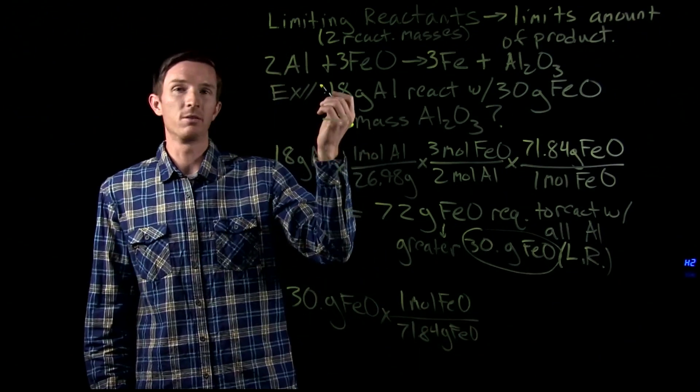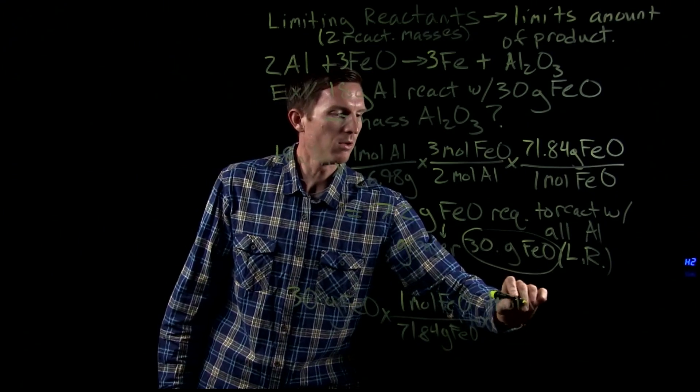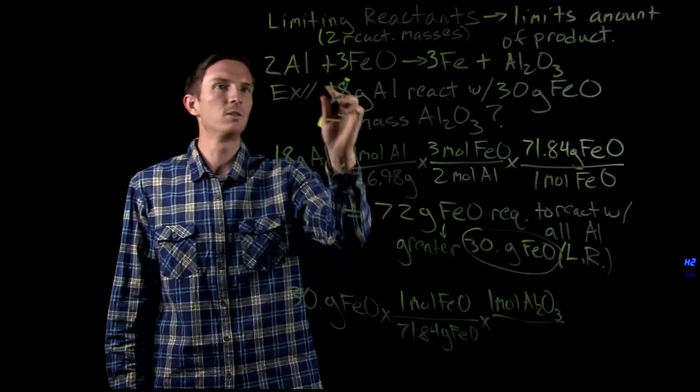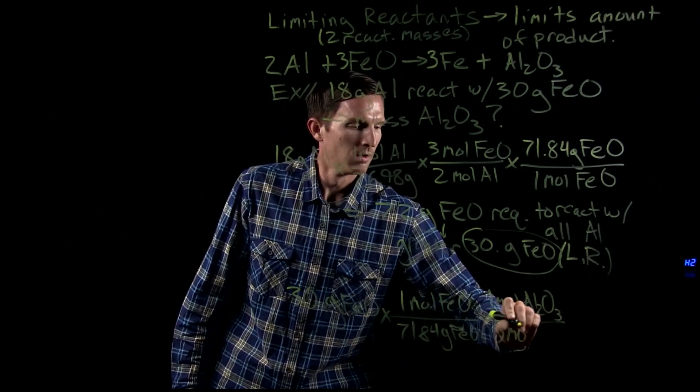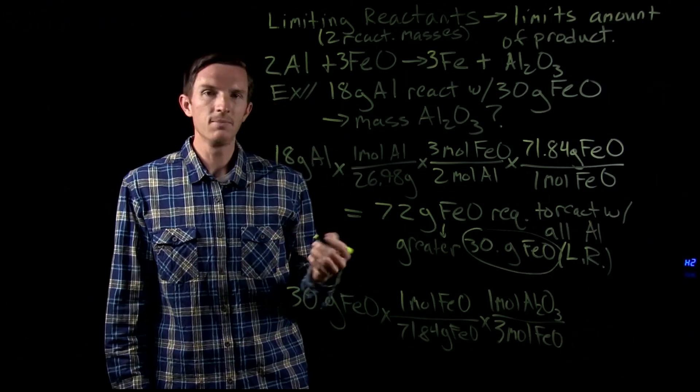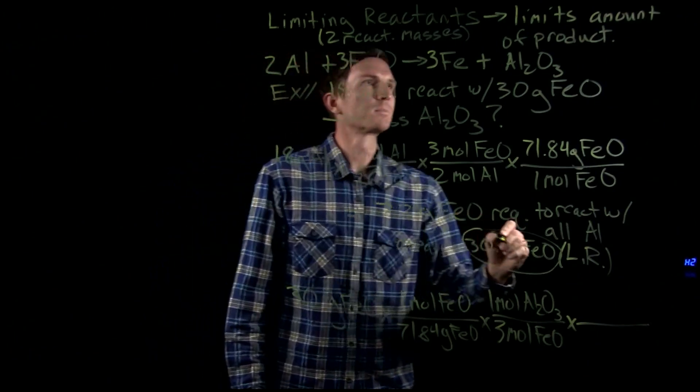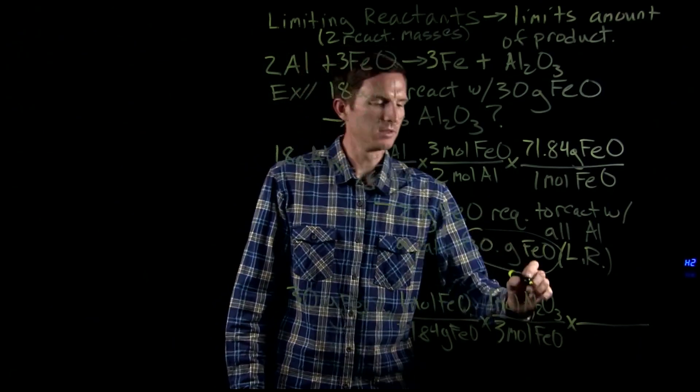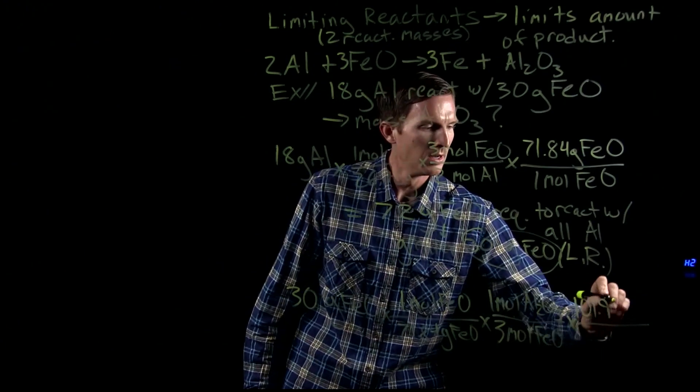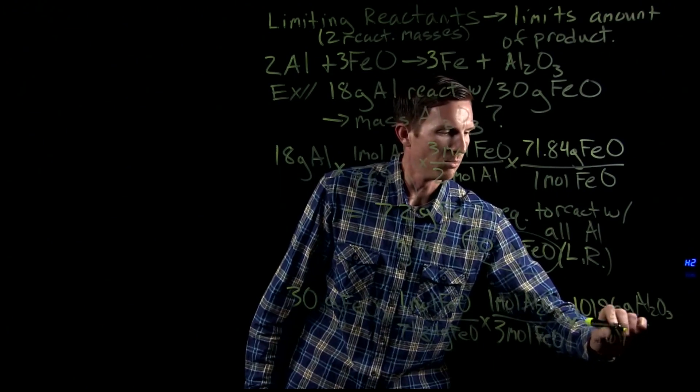And then we're going to use the stoichiometric relationship from our balanced equation. One mole of aluminum oxide equates to three moles of that iron oxide being reacted. And then finally, we could go ahead and use the molar mass of our aluminum oxide, which is 101.96 grams per mole.